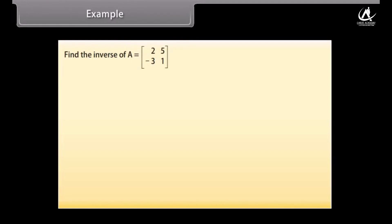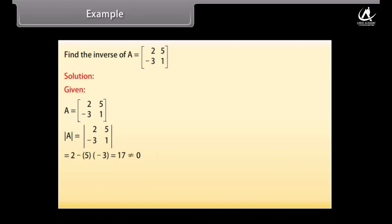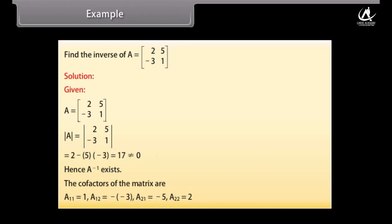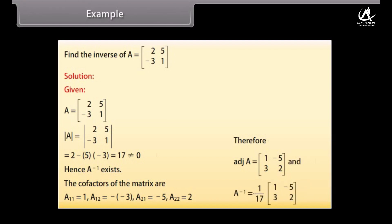Example: Find the inverse of A = [[2, 5],[-3, 1]]. Solution: det(A) = 2 - (5×(-3)) = 2 + 15 = 17, which is not equal to 0. Hence the inverse of A exists. Cofactors: A11=1, A12=-(-3)=3, A21=-5, A22=2. adj(A) = [[1,-5],[3,2]]. Inverse of A = (1/17)·[[1,-5],[3,2]].